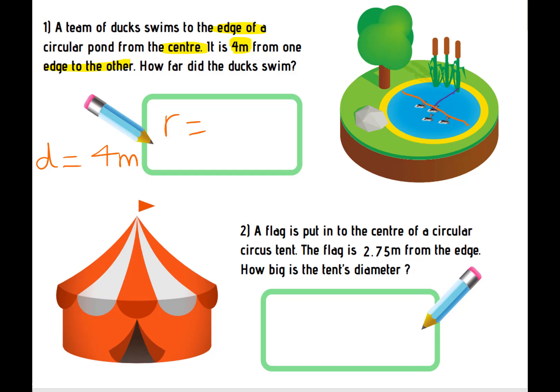So let's look at the next question. A flag is put into the centre of a circular circus tent. The flag is 2.75 metres from the edge. How big is the tent's diameter? So here you're actually told what you need to find. You need to find the diameter. So you are finding the diameter.